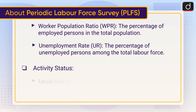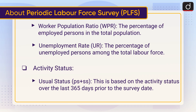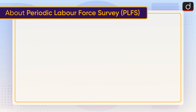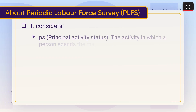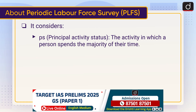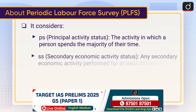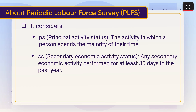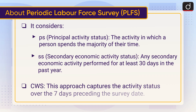Activity status types: Usual status is based on the activity status over the last 365 days prior to the survey date. It considers principal activity status — the activity in which a person spends the majority of their time — and secondary economic activity status — any secondary economic activity performed for at least 30 days in the past year. Current weekly status captures the activity status over the seven days preceding the survey date.